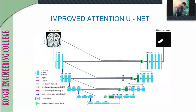This is the improved Attention U-Net and its architecture. First we take the input image, perform the following processes, and get the output image. In the output image, you can see we have accurately predicted the stroke lesions. Improved Attention U-Net is mainly used for improving accuracy in image processing.